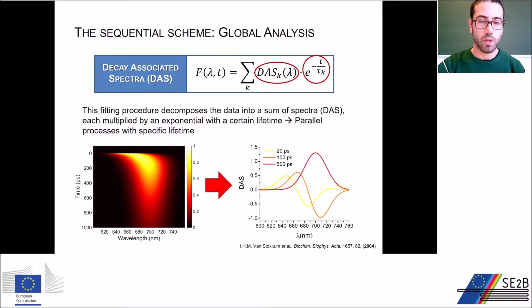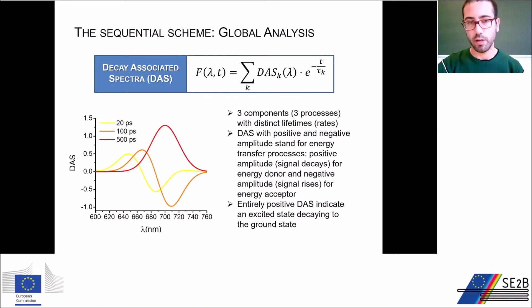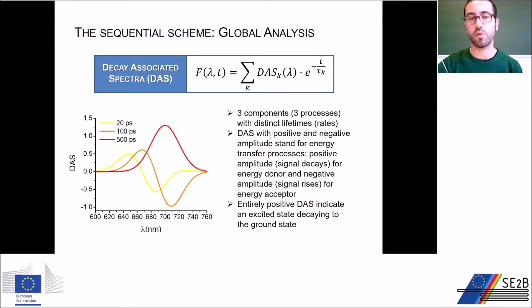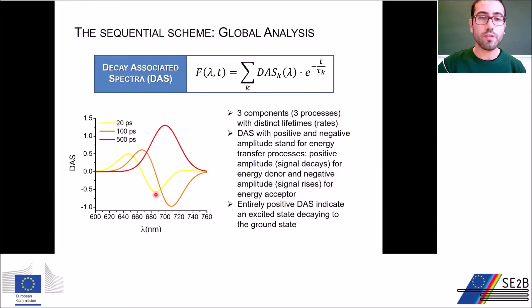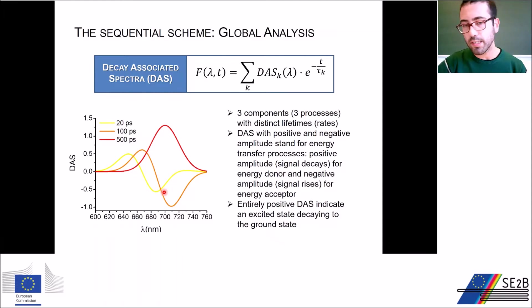For example, if we perform global analysis on the dataset shown, we get three DAS components representing three different processes. A DAS comprising a positive and negative part represents an energy transfer process, where the positive part stands for the spectrum of the donor species and the negative side represents the spectrum of the acceptor. In the yellow DAS, the positive part represents the donor emission spectrum around 640–660 nanometers, and the negative side represents the acceptor around 680 nanometers. A similar interpretation holds for the orange DAS. The red DAS is entirely positive and represents just an excited state decaying to the ground state.